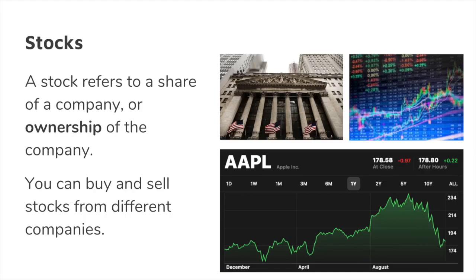Starting off with stocks — a stock is a share of a company, or a small percentage of ownership of that company. So when you say you're buying stocks, it basically means that you are buying a very, very small percentage of the company. You can buy and sell these different stocks. In the graph you can see that in one day, Apple's stock price was almost at $180, so you'd be buying a small percentage of Apple at $180.